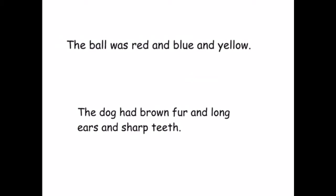Can you spot the problem in these two sentences? 'The ball was red and blue and yellow' and 'The dog had brown fur and long ears and sharp teeth.' The word 'and' has been used too often. We can remove the extra 'ands' and replace them with commas: 'The ball was red, blue, and yellow' and 'The dog had brown fur, long ears, and sharp teeth.'